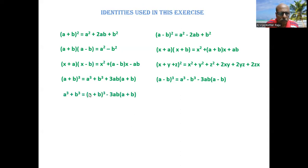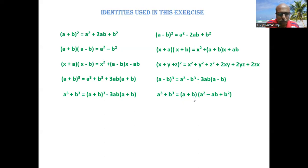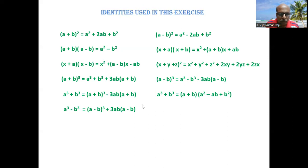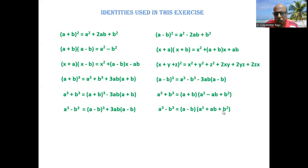From (a+b)³ = a³ + b³ + 3ab(a+b), we can derive a³ + b³ by rearranging: a³ + b³ = (a+b)³ - 3ab(a+b), which can also be written as (a+b)(a² - ab + b²). Similarly, a³ - b³ = (a-b)³ + 3ab(a-b), which equals (a-b)(a² + ab + b²).